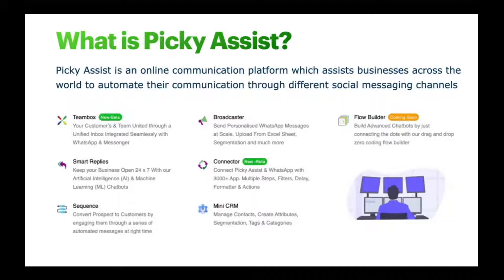Sequences is a favorite tool for marketers that sends a series of WhatsApp messages, useful for nurturing leads. Broadcaster enables sending personalized mass messages to WhatsApp — you can upload from an Excel sheet and segment users with different tags. Connector is a newly launched feature that helps you integrate WhatsApp into 3,000+ apps without writing any single line of code or using third-party automation platforms — it's completely built into the Picky Assist platform.